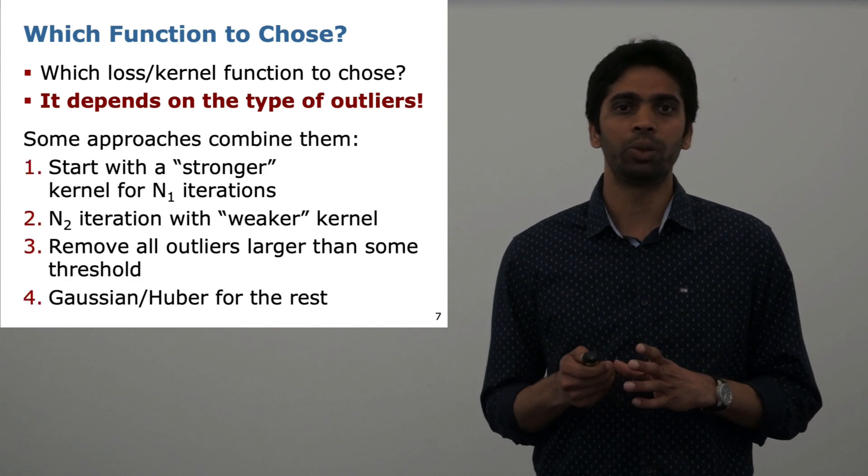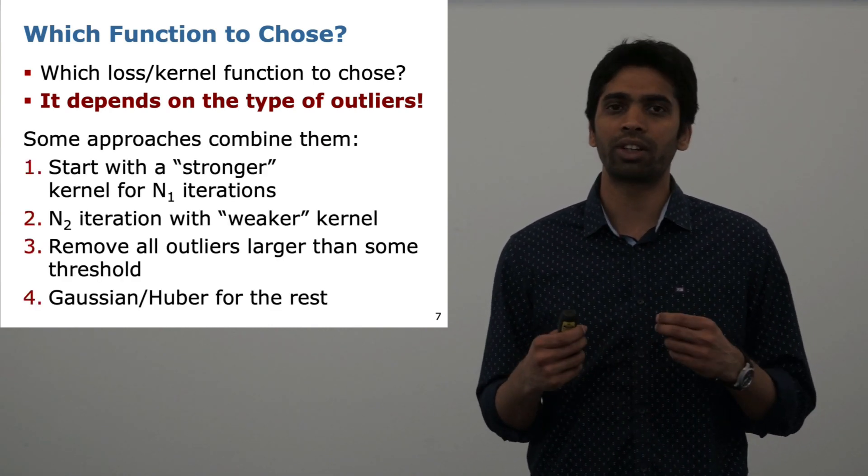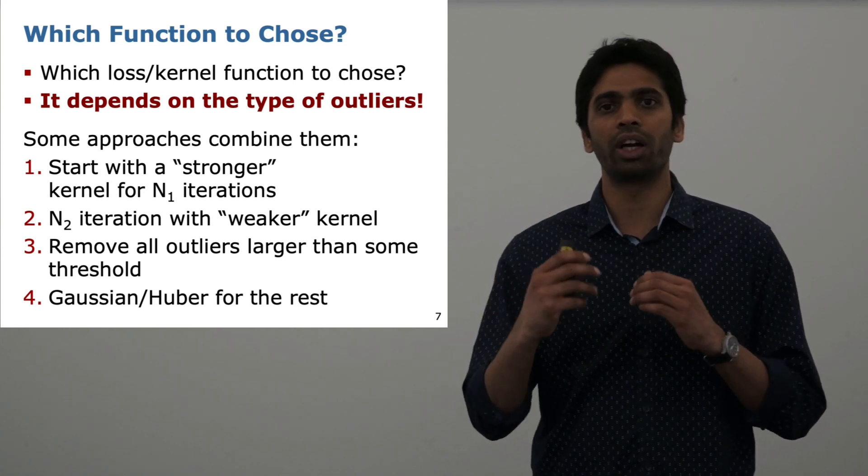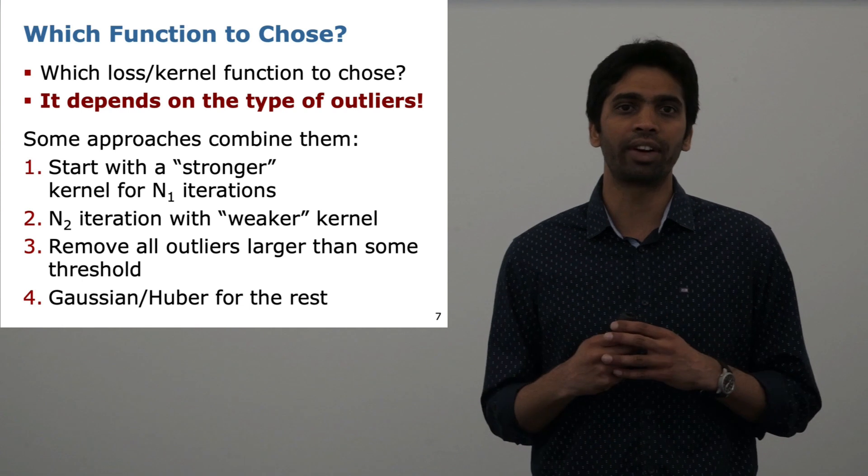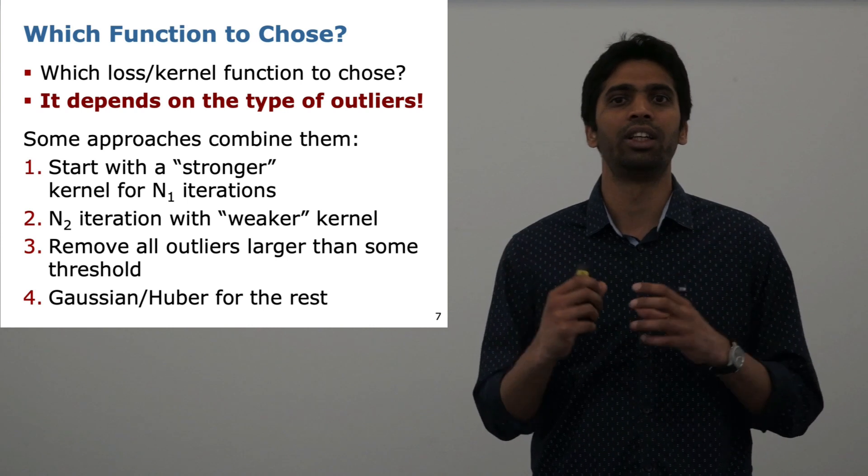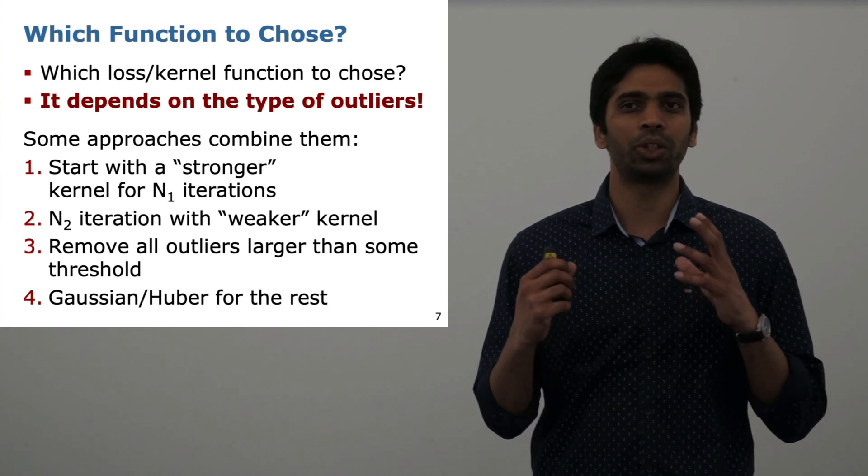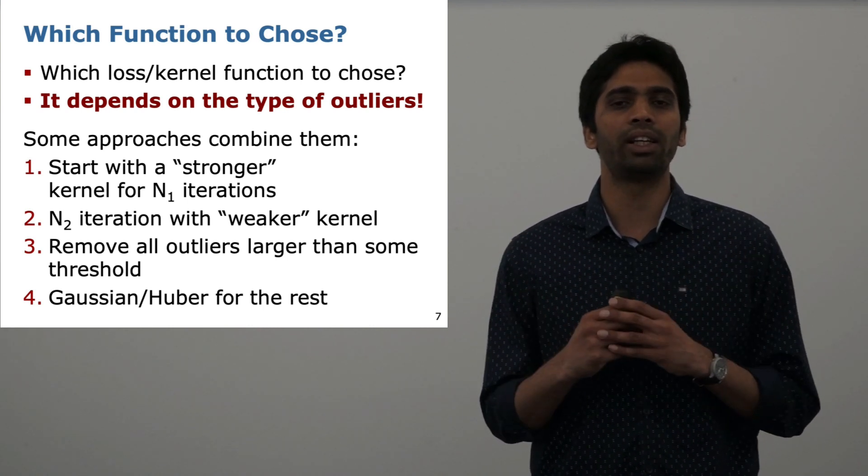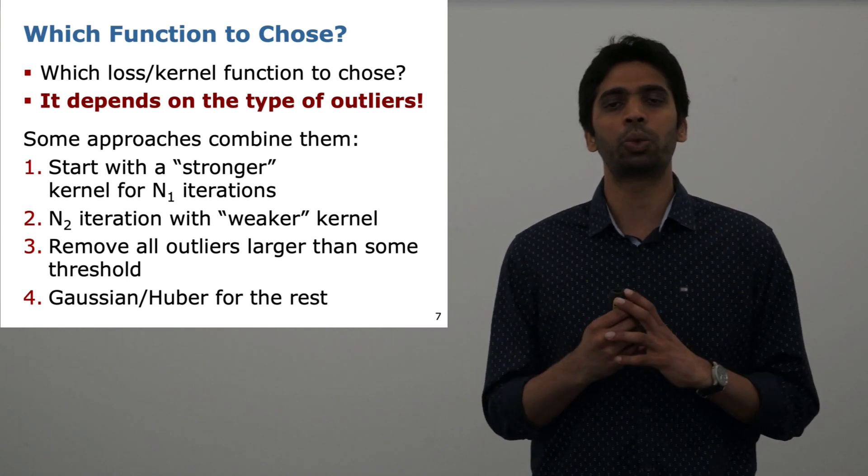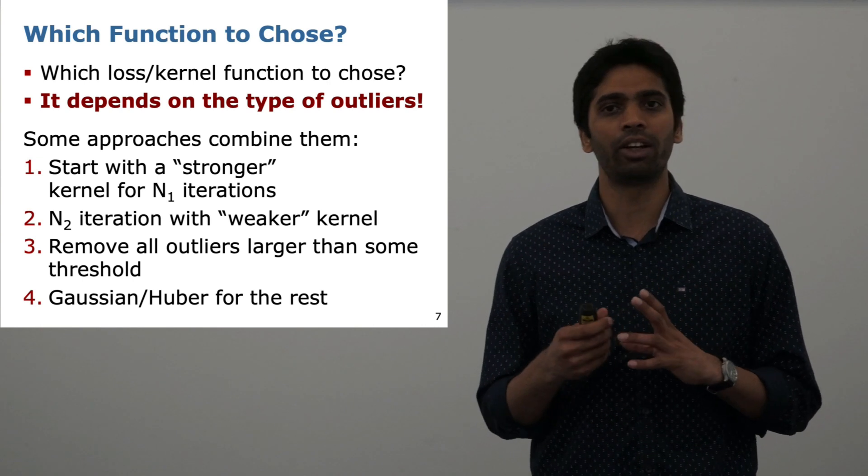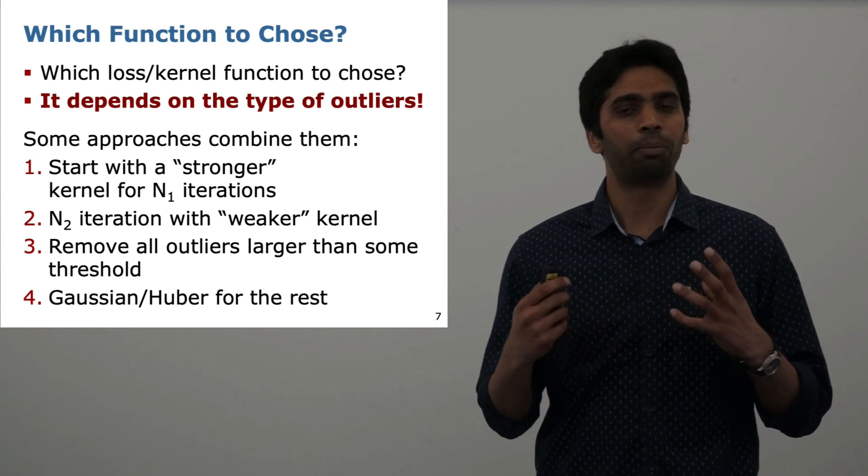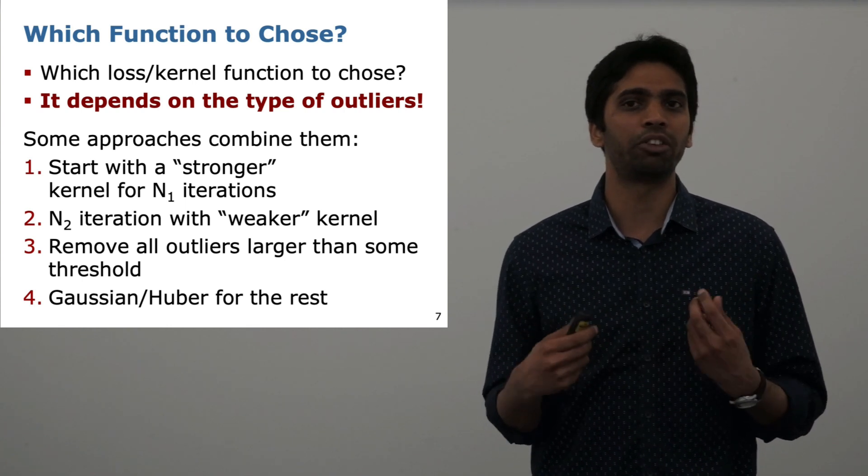What many people do is come up with a scheme like the following: You start with a loss function or a kernel which does strong downweighting for some number of iterations. Then you optimize your problem with a weaker kernel. Once you are sure, you can remove the outliers which fall behind some threshold, and then finally use the squared error or Huber for the remaining optimization. As you can see, this is quite a handcrafted approach and requires tuning for each new problem.